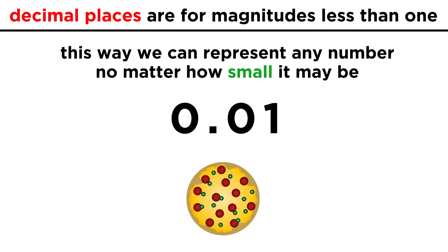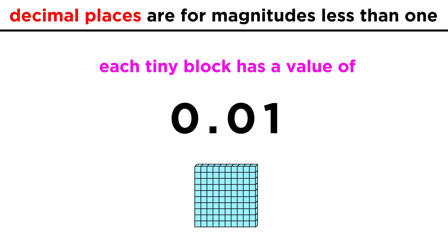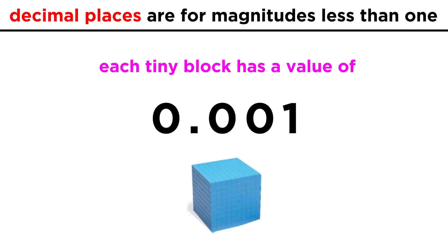That means this approach would work even if the pizza were cut up into a hundred slices, as each slice — or perhaps more easily visualized, each of these one hundred tiny squares — would be zero point zero one. If the large square were cut up into a thousand squares, each square would be zero point zero zero one, with the one in the thousandths place.